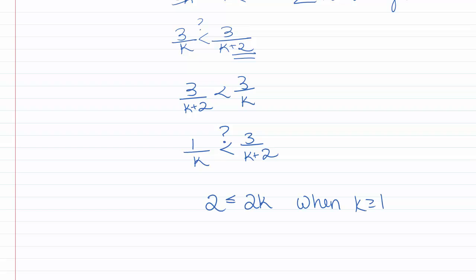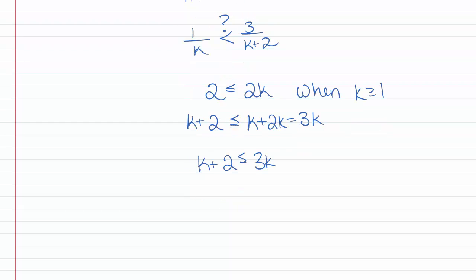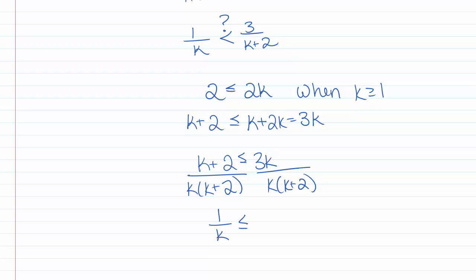We're going to say that 2 is less than or equal to 2k when k is greater than or equal to 1. Adding k to both sides, k plus 2 is less than or equal to k plus 2k, which is 3k. Now if k plus 2 is less than or equal to 3k, we can divide both sides by k times k plus 2 — since both k and k plus 2 are positive — and get that 1 over k is less than or equal to 3 over k plus 2, which is exactly what we needed.